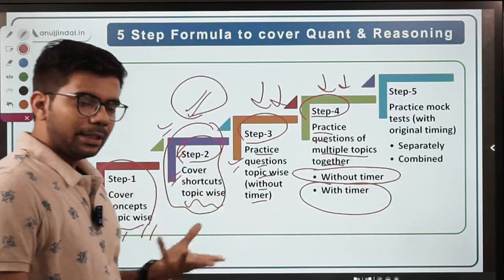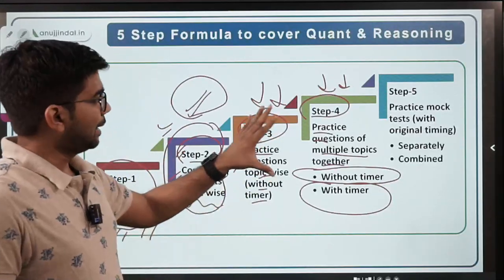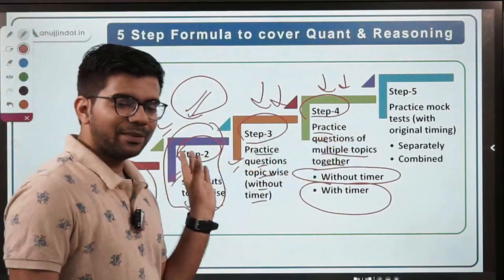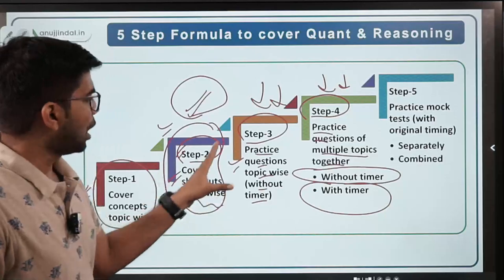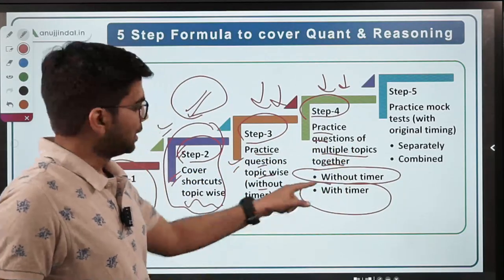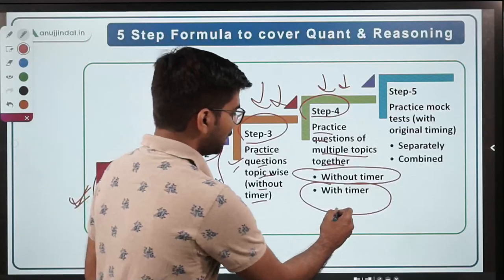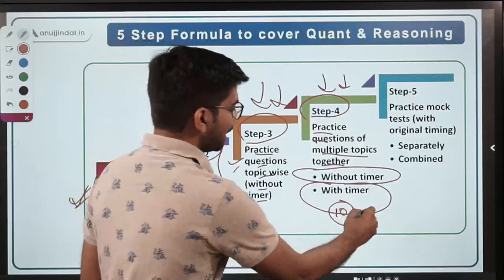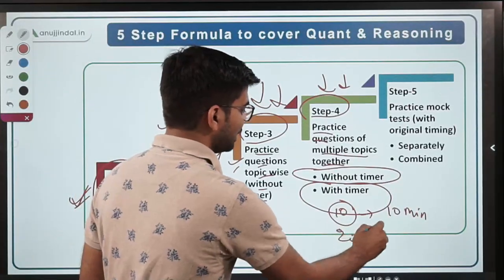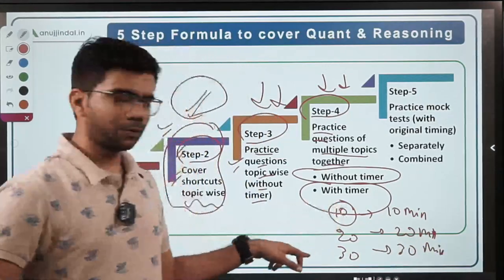According to your preparation and basic understanding, devote adequate days to steps one, two, and three, but leave a good number of days for steps four and five as well — this planning will be individual for each of you. In step four, when practicing with a timer, you can start with 10 questions from multiple topics and set a timer for 10 minutes. Then increase to 20 questions in 20 minutes, then 30 questions in 30 minutes, gradually increasing the number of questions and time.